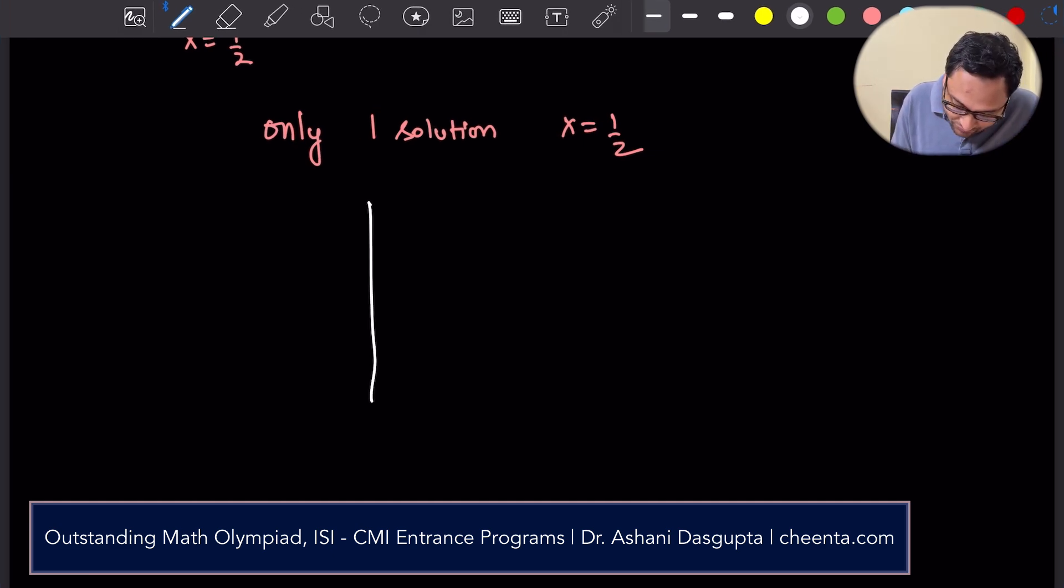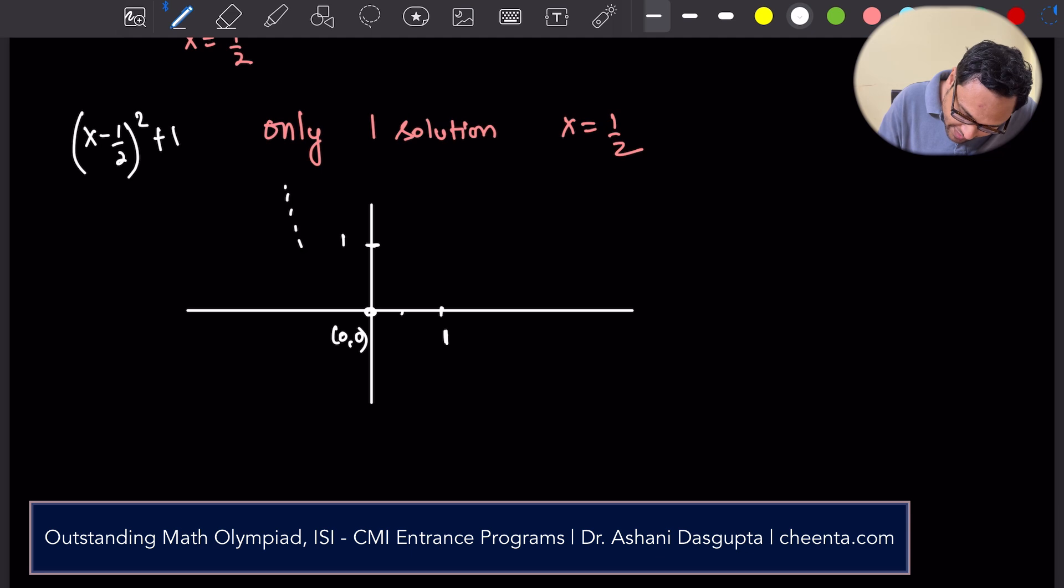So what is x minus half whole square plus 1? What is this? How does this look like? x minus half whole square plus 1. So this is 0 comma 0. This is 1. Suppose this is 1. Okay. So x minus half whole square. So the x square looks like this. The formula, the graph of y equal to x square. Now what we can do is we can do graphical transformation.